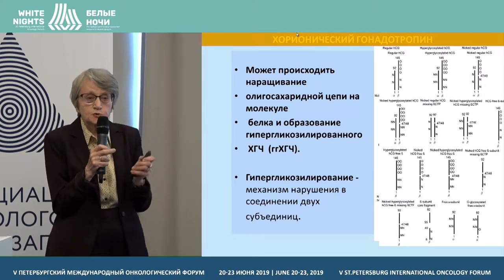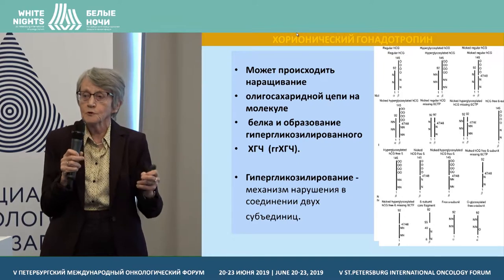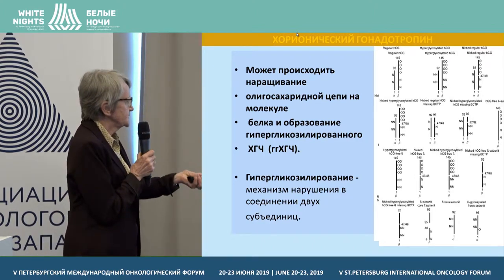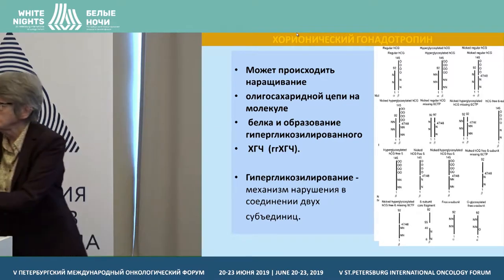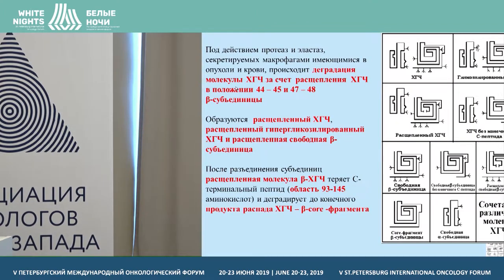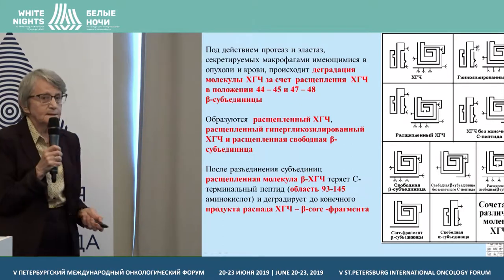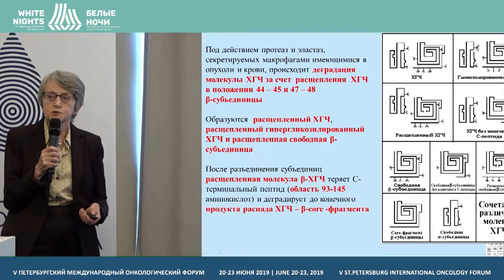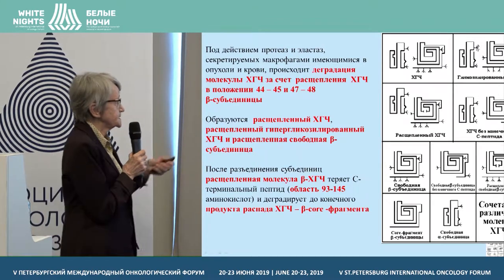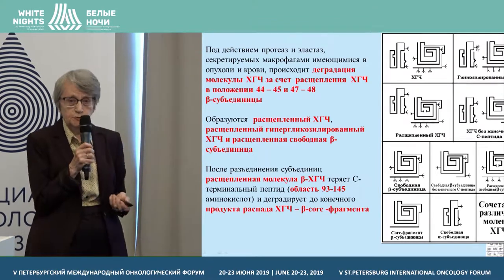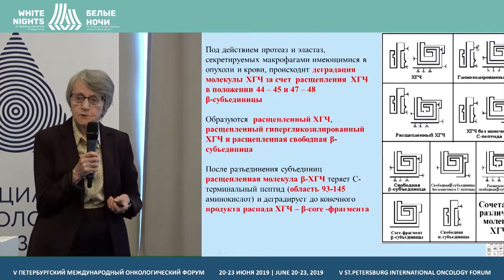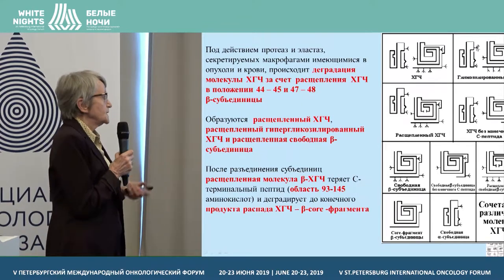This process facilitates impairment of the link between the two subunits, alpha and beta. So apart from hyperglycosylation, there is also a splitting — relevant to the beta subunit between amino acids 44, 45, 47, and 48. You can see here how this molecule is split.